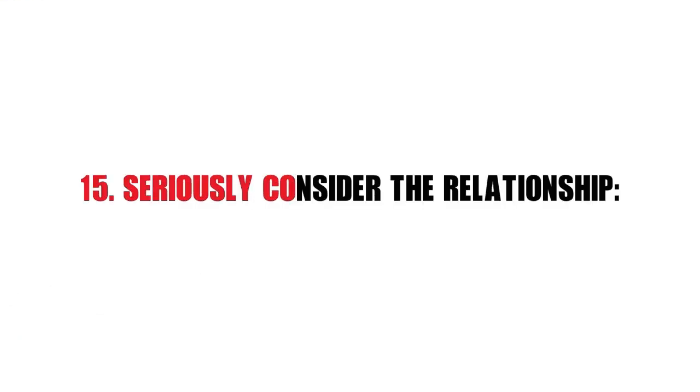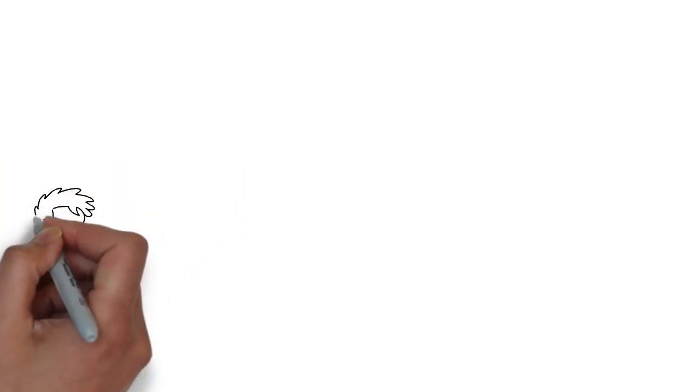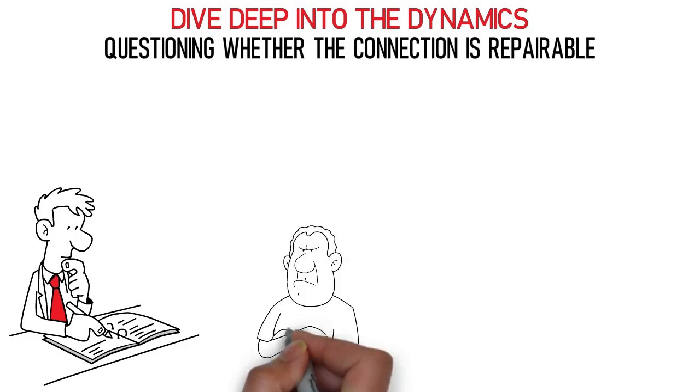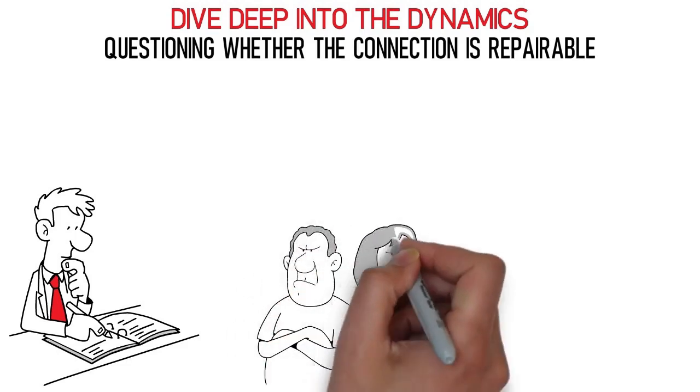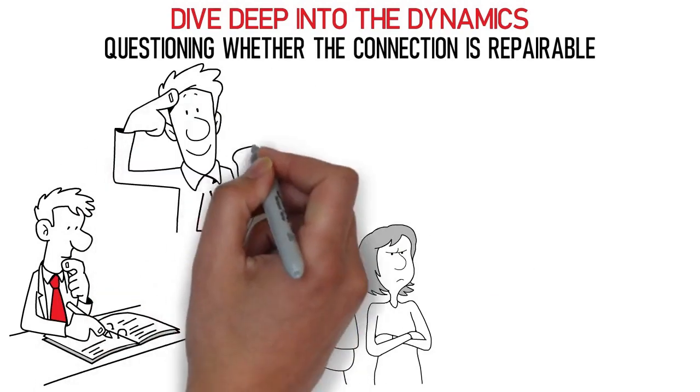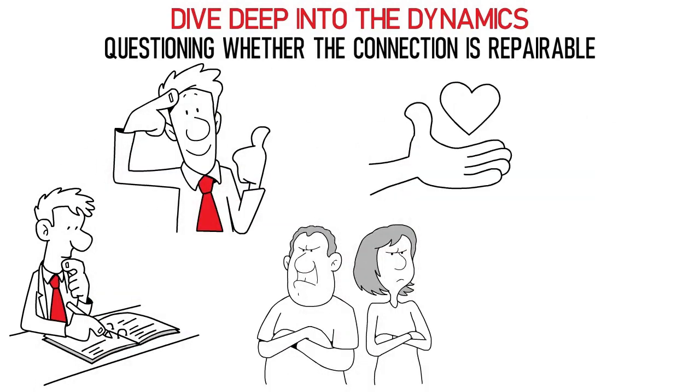15. Seriously consider the relationship. Engaging in a reflective assessment of your relationship is a pivotal step toward empowerment. Dive deep into the dynamics, questioning whether the connection is repairable or if separation would lead to a healthier future for all involved. This introspection allows you to make an informed decision that aligns with your wellbeing.